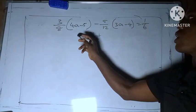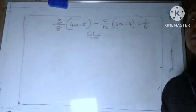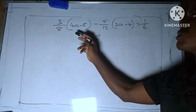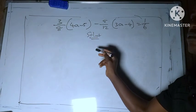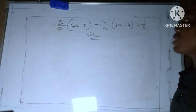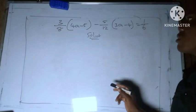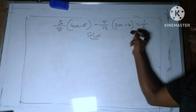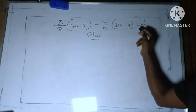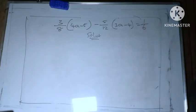Okay, welcome back. We are asked to simplify this equation. We are given 3 over 8, bracket 4a minus 5, bracket close, minus 5 over 12, bracket 3a minus 4, bracket close, equal to 1 over 6.